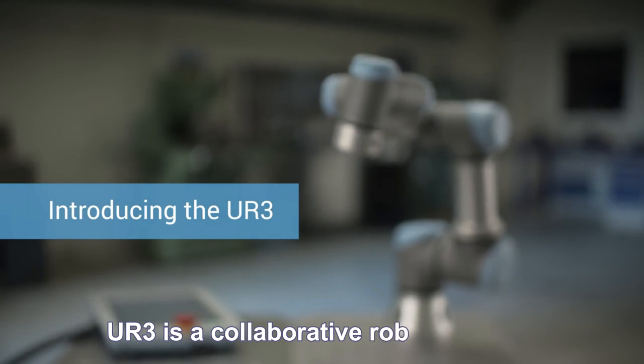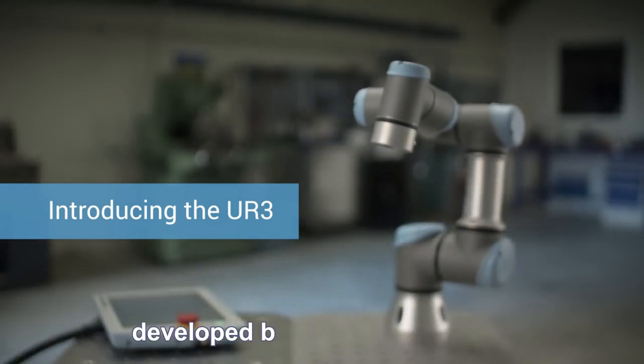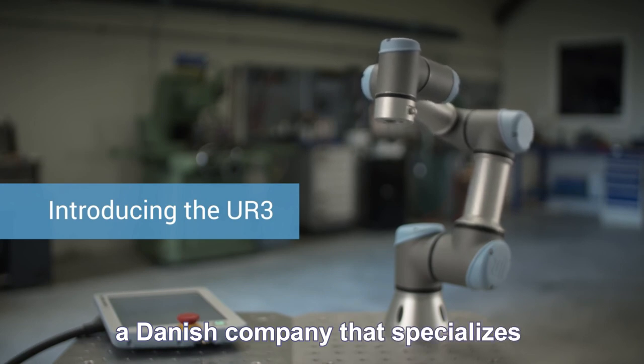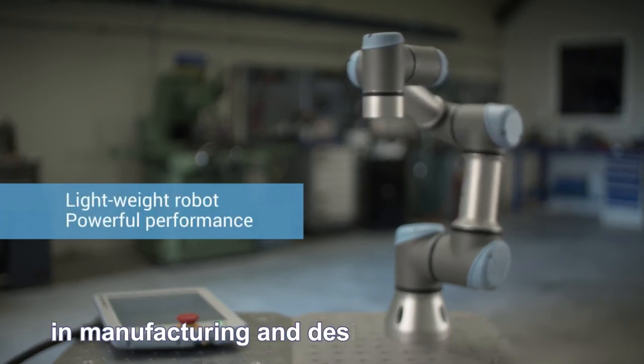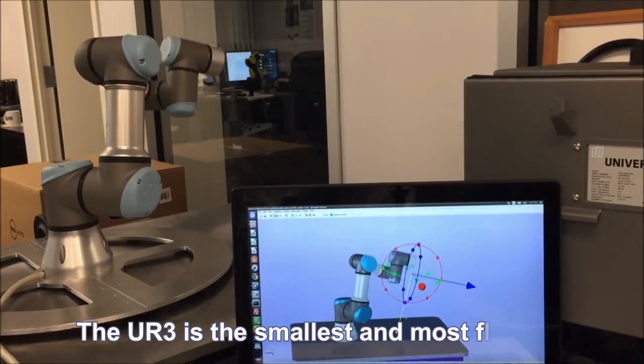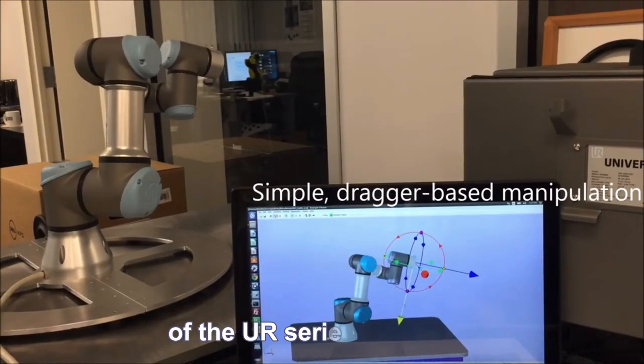UR3 is a collaborative robot or cobot developed by Universal Robots, a Danish company that specializes in manufacturing and designing robotic arms. The UR3 is the smallest and most flexible of the UR series of robots.